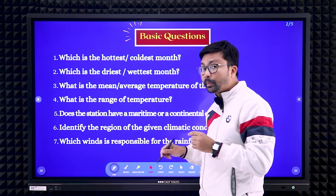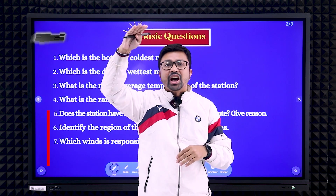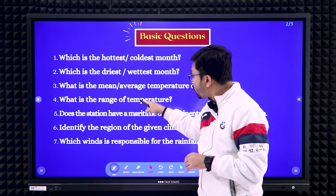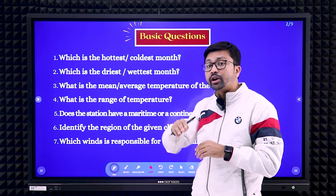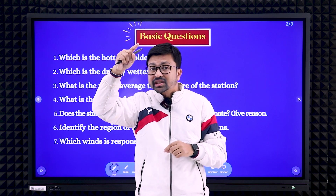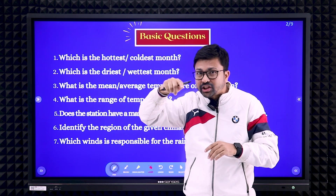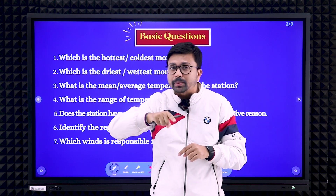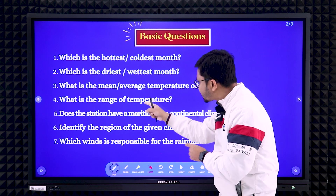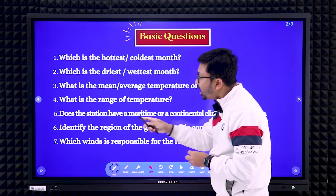Next: what is the range of temperature? Range means highest minus lowest. You need to check which month has the highest temperature and which month has the lowest temperature, then subtract. Express the answer in degree Celsius. You can answer this question very easily.